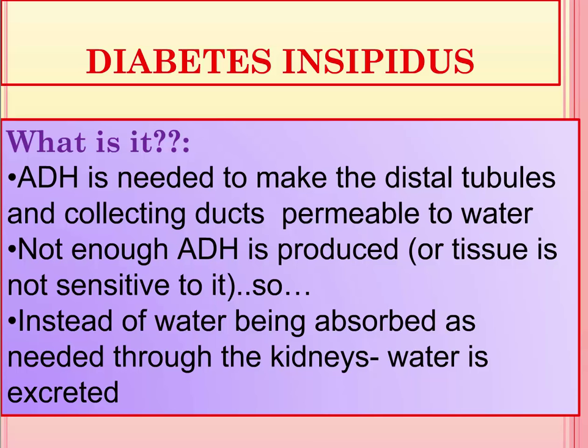So what is diabetes insipidus? Basically, anti-diuretic hormone is needed to make the distal tubules and the collecting ducts of the kidney permeable to water, in order for water to be reabsorbed. With diabetes insipidus, there is just not enough ADH produced, or the tissue is not sensitive to it. As a result, instead of water being absorbed as needed through the kidneys, water is being excreted in large amounts.